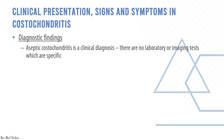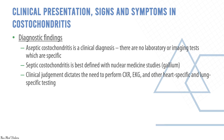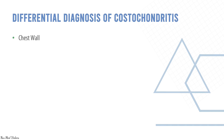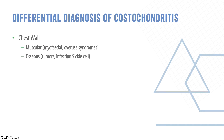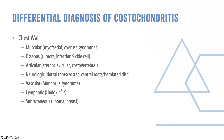Aseptic costochondritis is a clinical diagnosis — there are no specific lab or imaging tests. Septic costochondritis is best defined with nuclear medicine studies. Clinical judgment dictates whether to perform X-ray, ECG, and other heart- or lung-specific testing to rule out other conditions such as muscular overuse syndromes, osseous causes like tumors or sickle cell anemia, infections, articular issues like sternoclavicular or costovertebral joint problems, neurological causes like herpes zoster or a herniated disc, and vascular causes like Mondor syndrome.